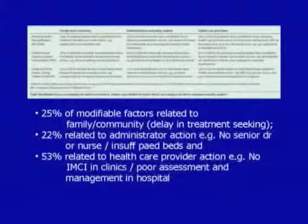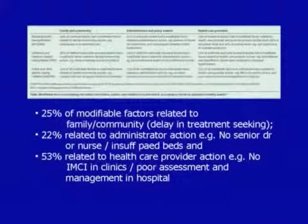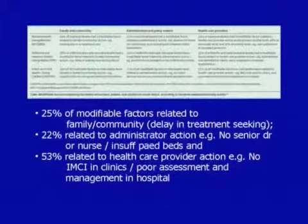The Every Death Counts reports also looked at modifiable factors for preventing childhood deaths: 25% relate to family or community factors, mainly delay in treatment-seeking; 22% are related to administrative issues such as no senior doctor or nurse available, or insufficient beds; and 53% are related to healthcare provider actions, such as no specific guidelines available or poor assessment and management in hospital.